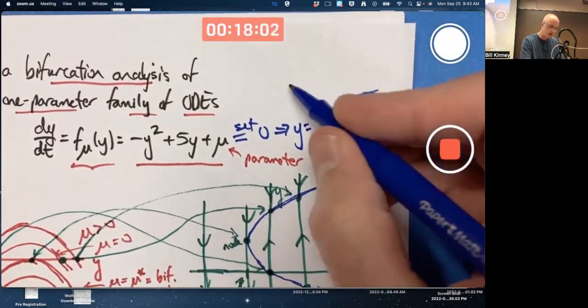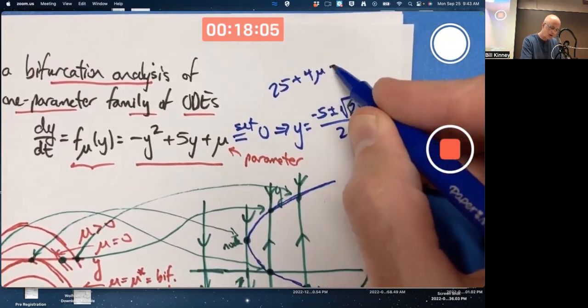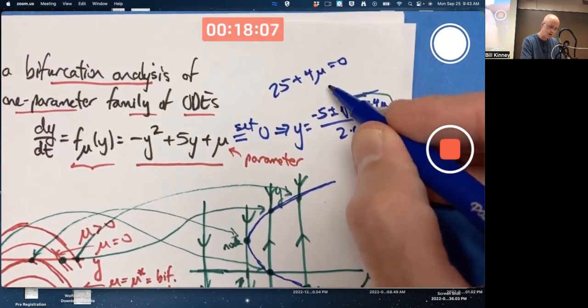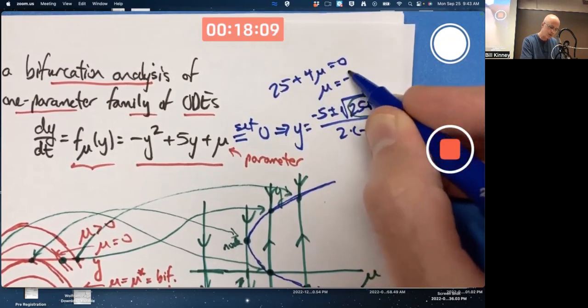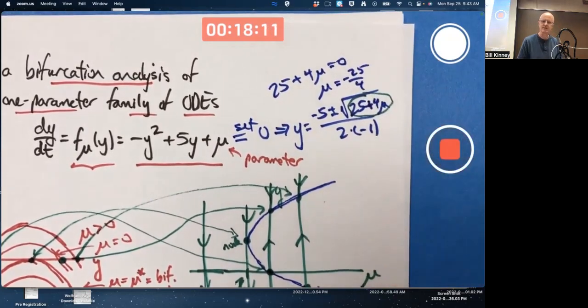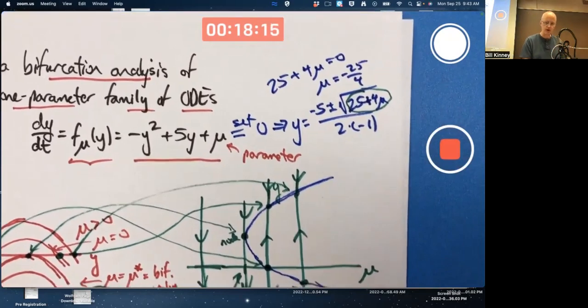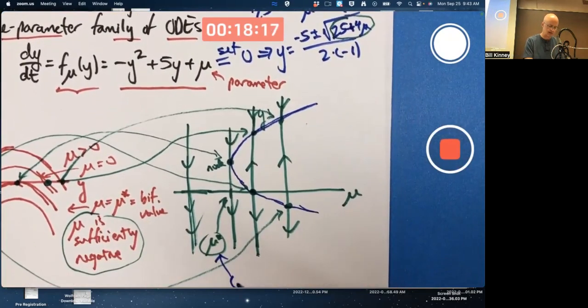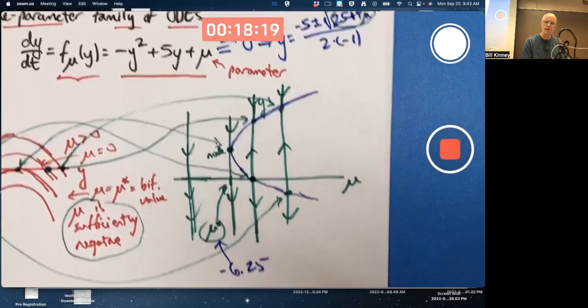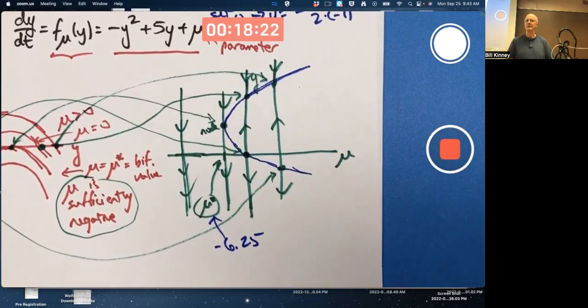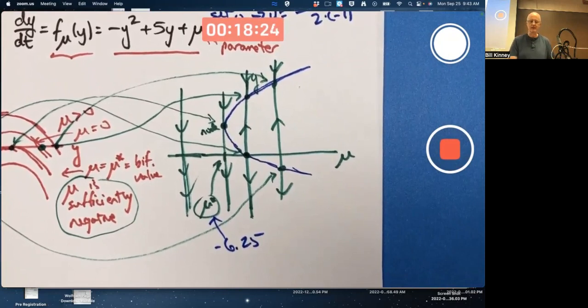So where is that zero? 25 plus four mu is zero. Means four mu is negative 25. So mu ultimately is negative 25 fourths. Negative 6.25 is what mu star is. That's the bifurcation value where the change occurs. Okay.